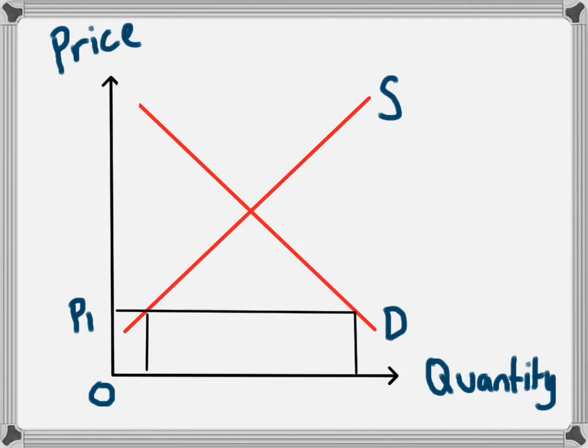In this example, we're looking at a product whose price is at P1. This is below the equilibrium price because we have overseas producers willing to sell the product at a price lower than the domestic equilibrium. Because the price is so low, domestic producers will only supply from 0 to Q1 because they're not making much profit on every unit sold.